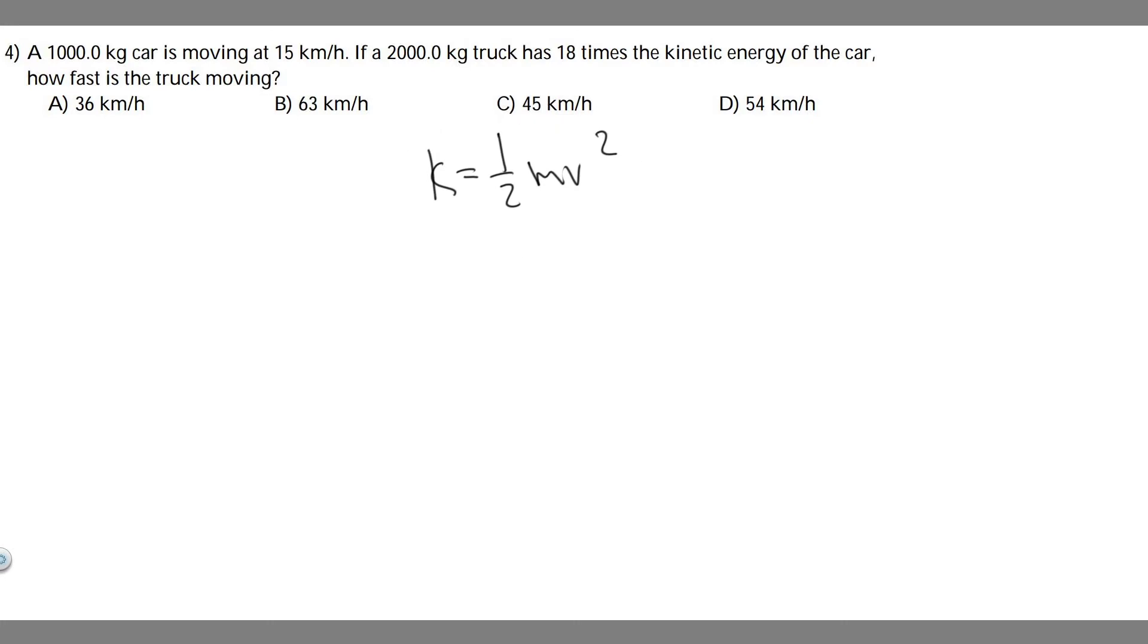We have this car. We know the mass of it and that it's moving at 15 kilometers per hour. We have this truck which has 18 times the kinetic energy of the car. What we're going to do is find the kinetic energy of the first car, multiply it by 18, and then that's going to allow us to solve for V. Let's start by finding the kinetic energy of this car.